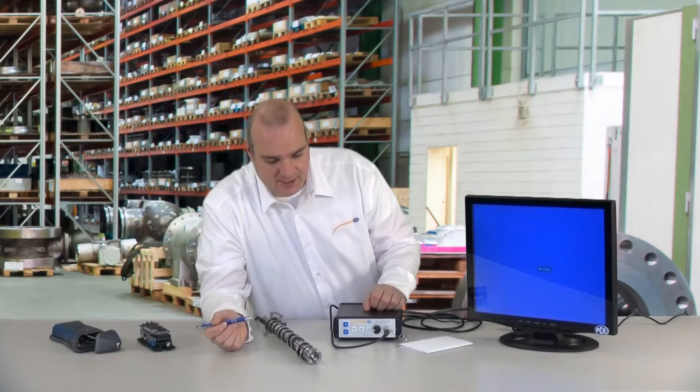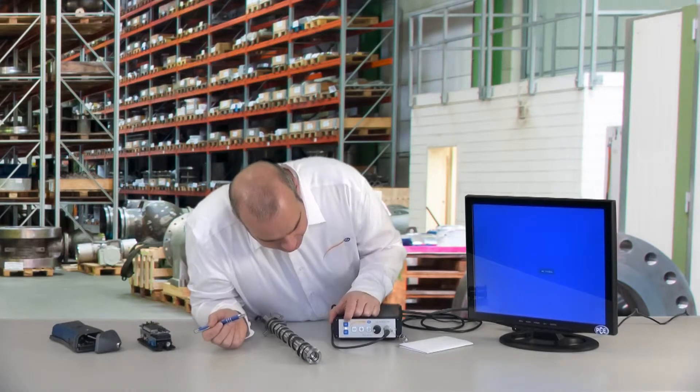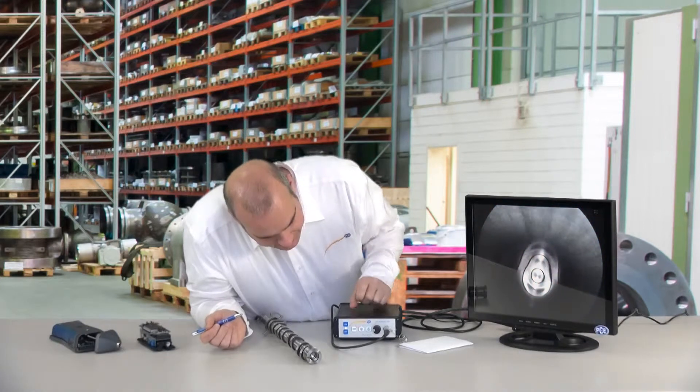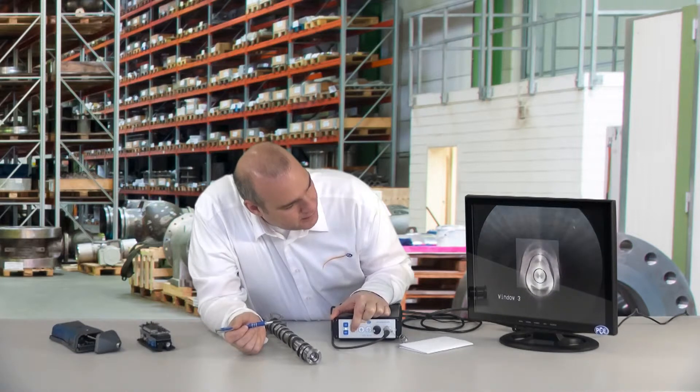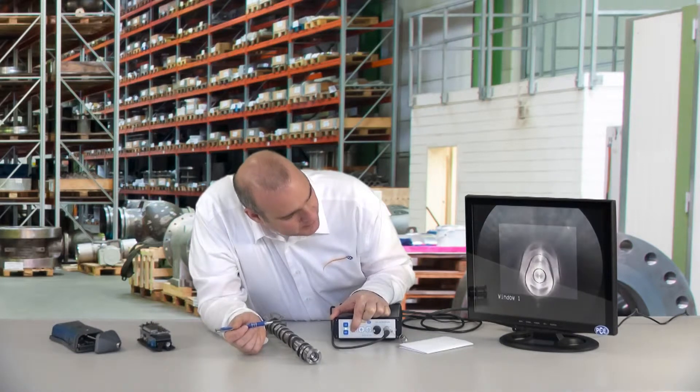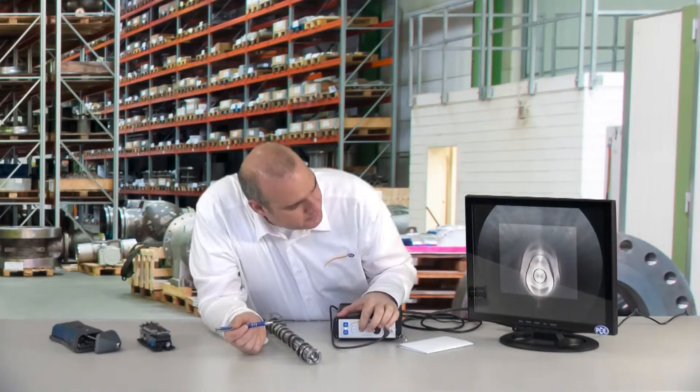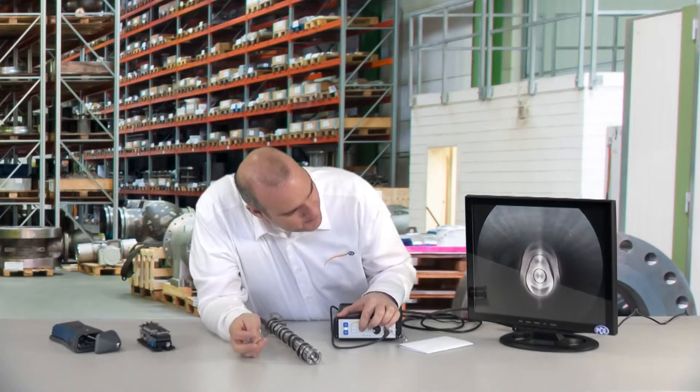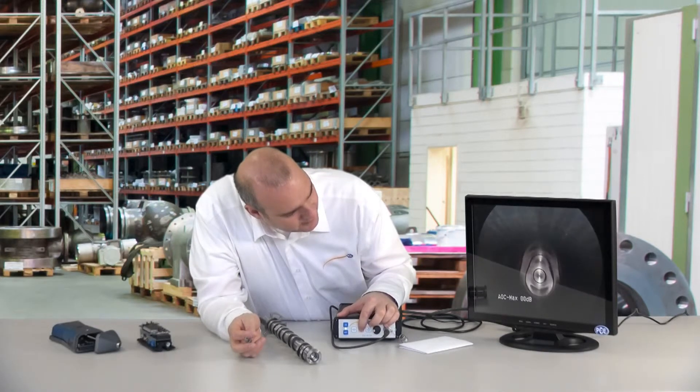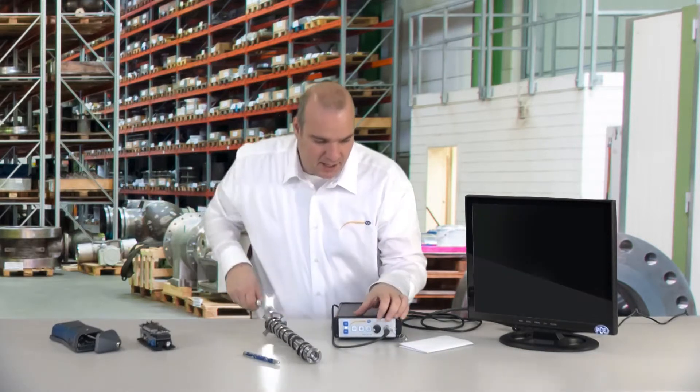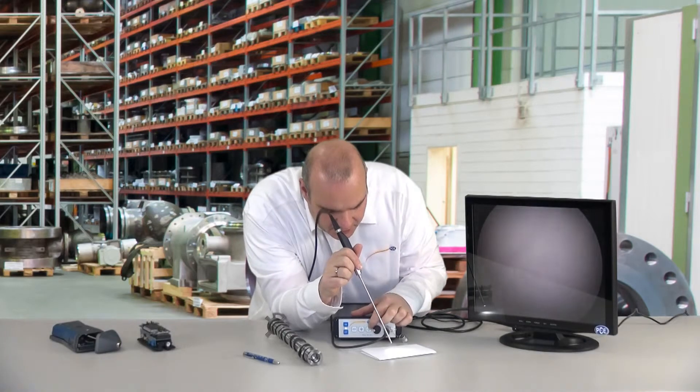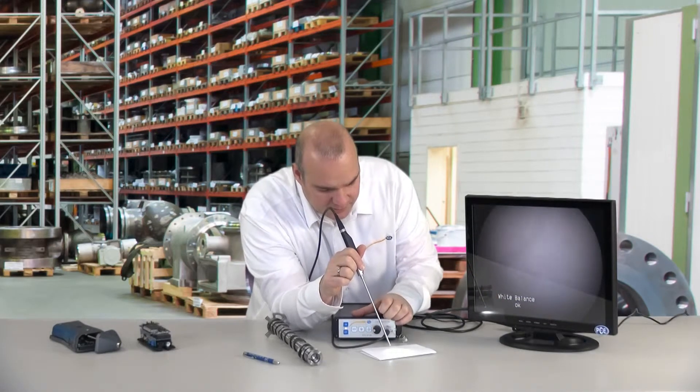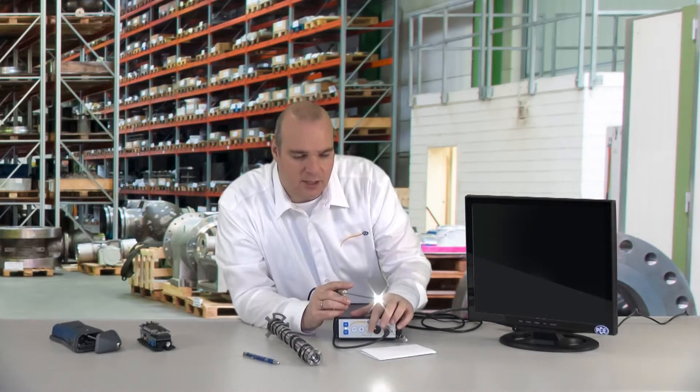On the front we have the following connections: first the on button. I have the possibility, depending which probe is connected, to select the corresponding windows. Can make it all more light sensitive by using the gain button. Can also make my white adjustment, that is what I always recommend when a new probe is used. And can also at the front turn the LEDs lighter or darker.